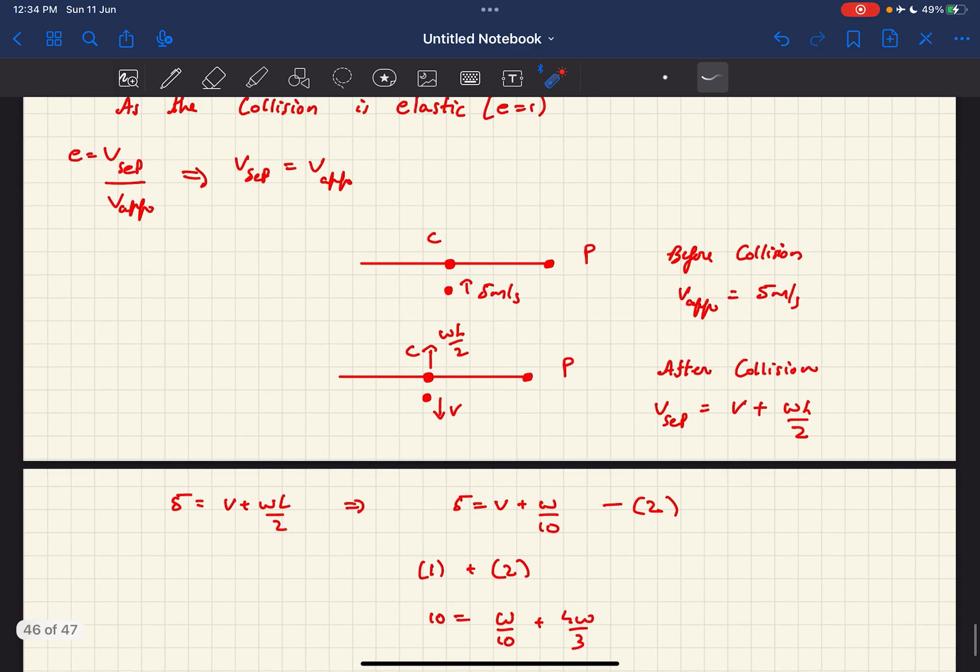Now just after collision, these two bodies move away from each other with a speed of v plus omega l by 2. Omega l by 2 because this point is at a distance of l by 2 and this rod is rotating with the velocity of omega. So the linear velocity of point c we can write as omega l by 2. So the separation velocity we can write as v plus omega l by 2, which is the velocity with which these points move away from each other after collision.